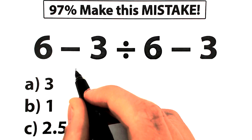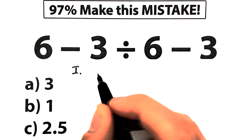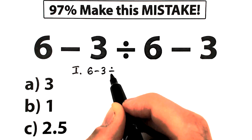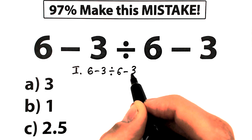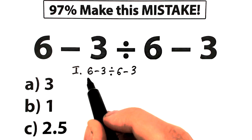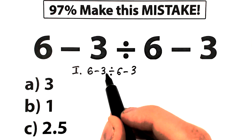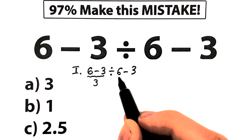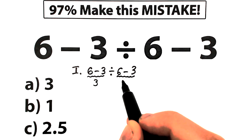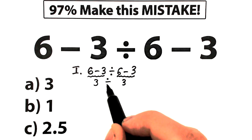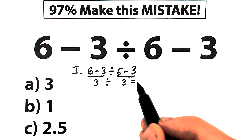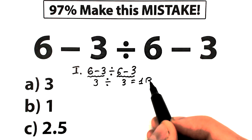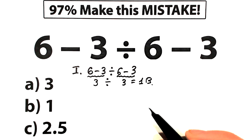Here's the first interpretation of this challenge. It looks like a very easy challenge, but a lot of students make this common mistake. We have 6 minus 3 divided by 6 minus 3. A lot of students say: we have the same expression on both sides of the division — 6 minus 3 equals 3, and 6 minus 3 equals 3 — so 3 divided by 3 equals 1. Those students say the correct answer is option B.